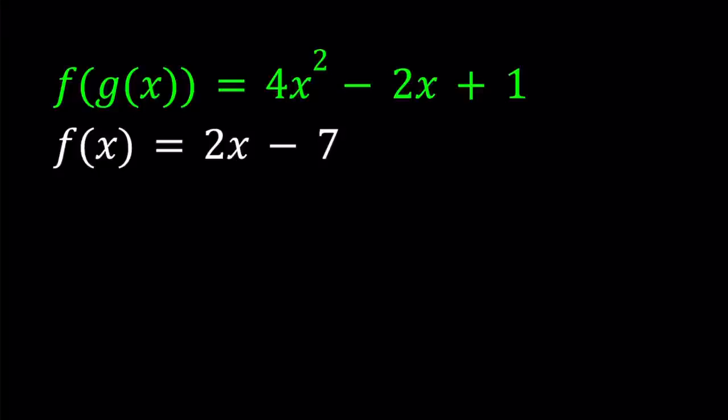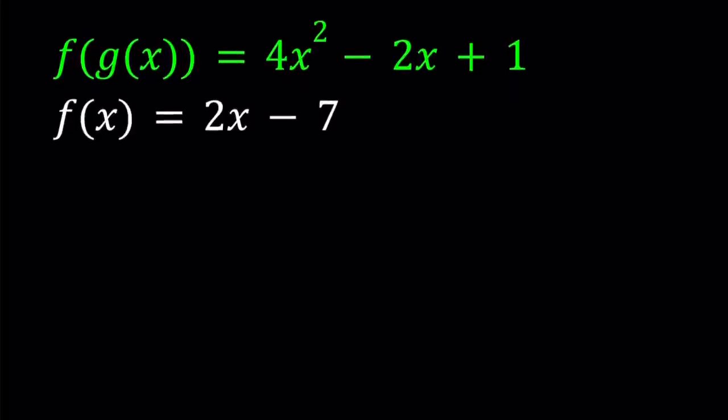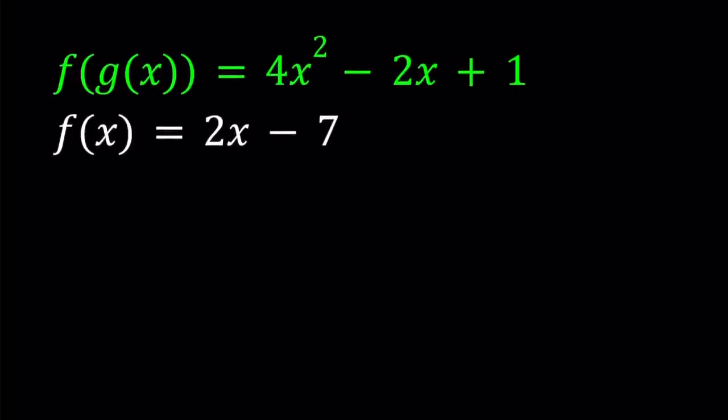Hello everyone. In this video we're going to be solving a functional system. We're given f(g(x)) equals 4x squared minus 2x plus 1 and f(x) equals 2x minus 7, and we're going to be finding g(x) from this equation.